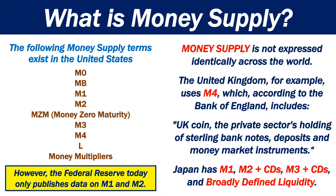Money supply is not expressed identically across the world. The United Kingdom, for example, uses EM4, which, according to the Bank of England, includes UK coin, the private sector's holding of sterling bank notes, deposits, and money market instruments. Japan has EM1, EM2 plus CDs, EM3 plus CDs, and broadly defined liquidity.